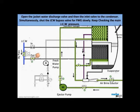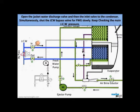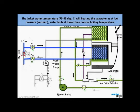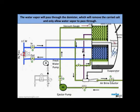Open the jacket water discharge valve and then the inlet valve to the condenser. Simultaneously, shut the jacket water bypass valve for the generator slowly. Keep checking the main jacket water pressure. Water vapor will be created by heating off the jacket water temperature, as at low pressure water boils at lower than the normal boiling temperature. The generated water vapor will pass through the demister, which will remove the carried salt and only allows water vapor to pass through. The shell temperature will increase and there will be a slight drop in the vacuum. This indicates evaporation has started.